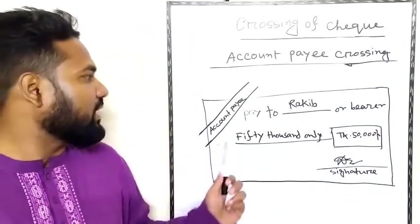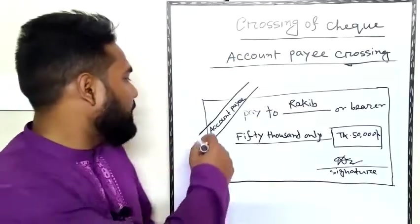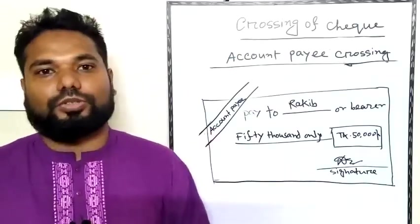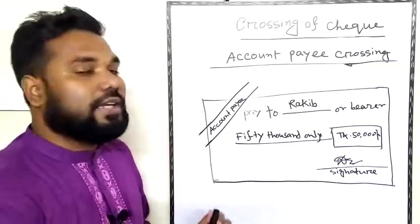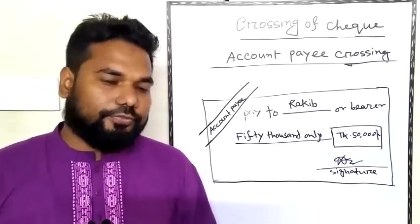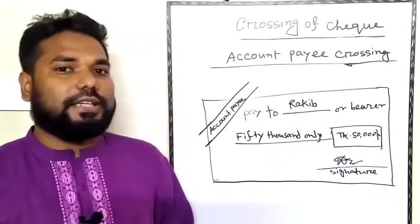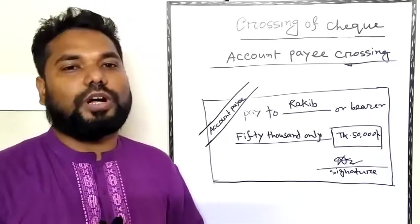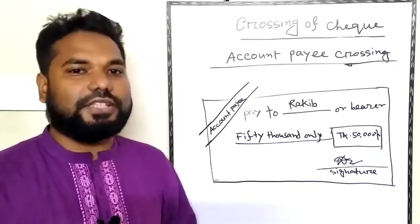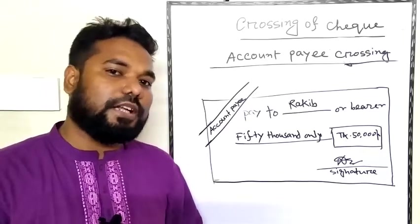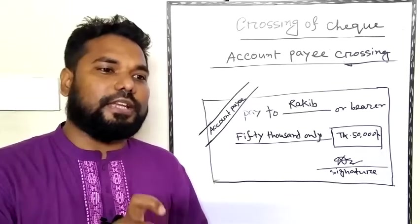With account payee crossing, which is also a restrictive crossing, you can transfer the check amount into the account payee. The payment goes directly to the specified account payee.